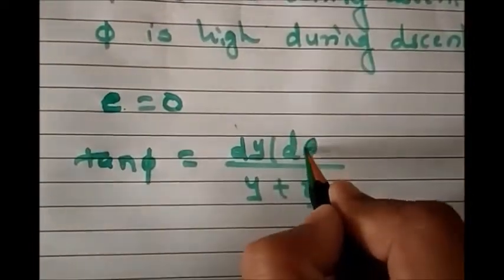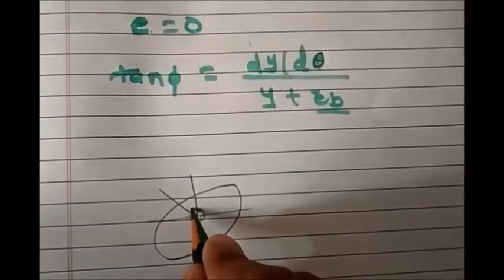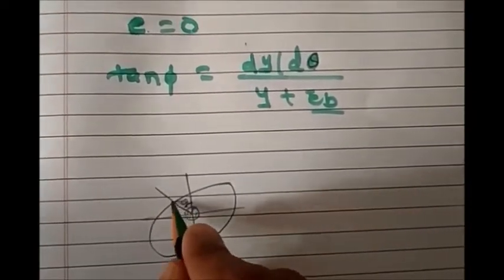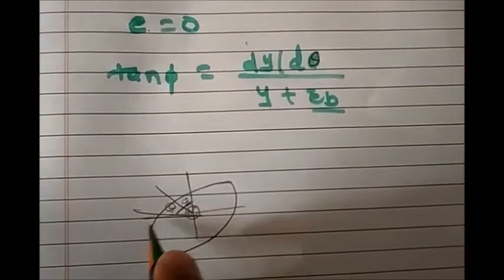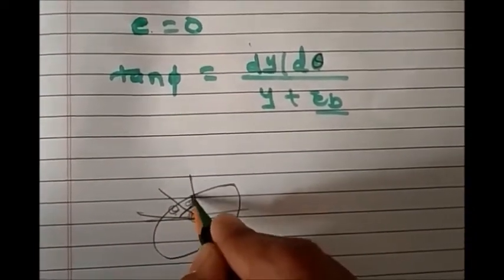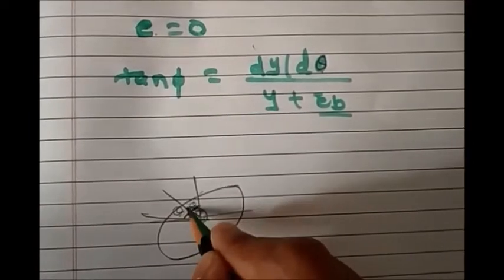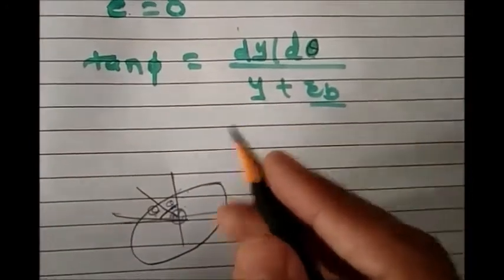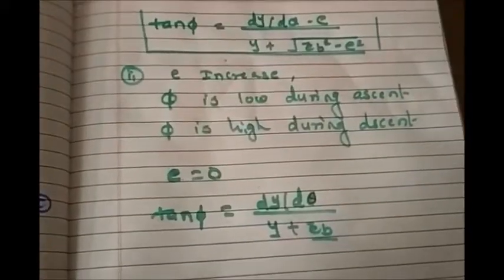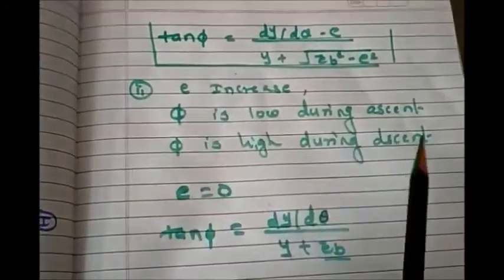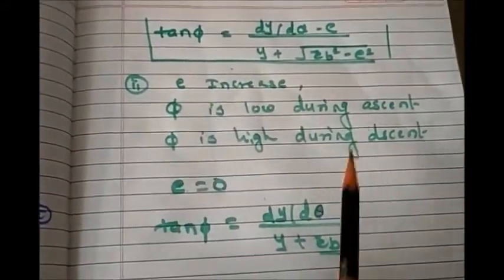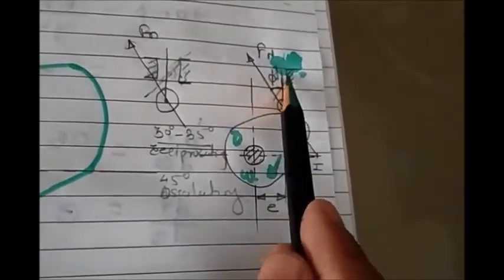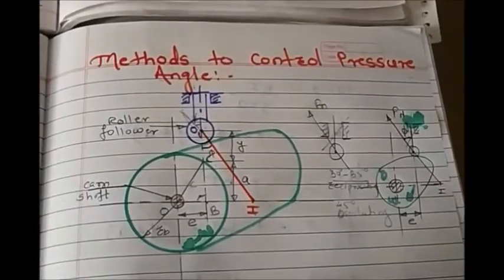The pressure angle can also be reduced by increasing the angle of rotation θ. When we increase the angle of rotation θ, the length of the pitch curve increases, and due to this increased length the cam profile becomes flatter, so the pressure angle becomes smaller. In this way we can keep the pressure angle in a cam and follower system as small as possible to avoid friction between the guides and the follower surface.